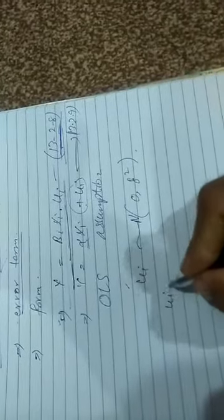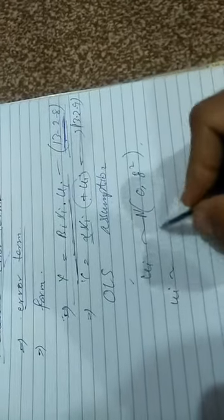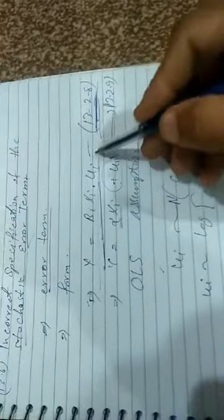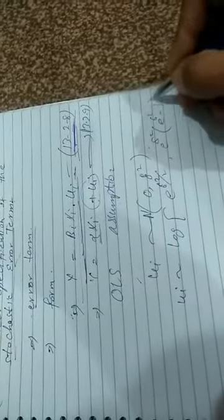اب OLS assumptions hold کر رہے ہیں ہم کس base پہ کر رہے ہیں ui کو normalize کرنے کے لیے جو form دیا گیا ہے کہ ui ہم calculate کر رہے ہیں اس model سے وہ کس base پہ calculate کر رہے ہیں. sigma square divide by 2 into sigma square e ki power sigma square minus 1.